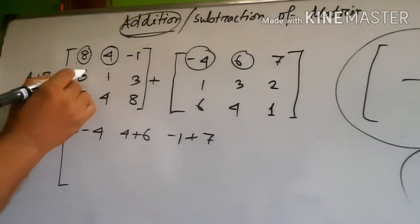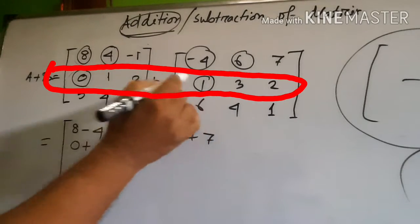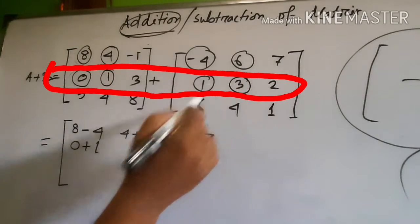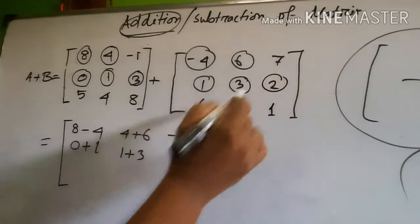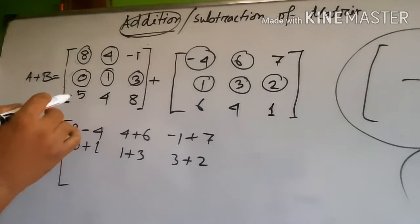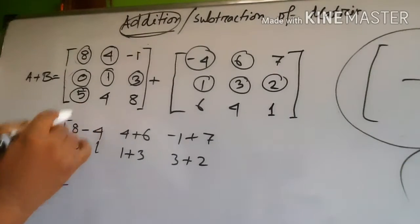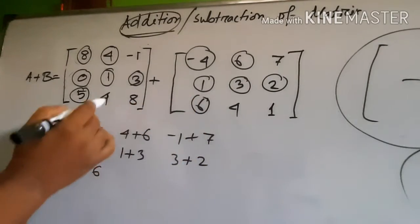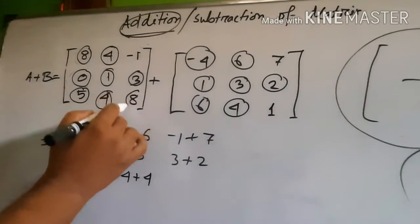Next, zero plus one. Next, one plus three. Next, three plus two. And finally, third row and third row: five plus six, four plus four, eight plus eight.